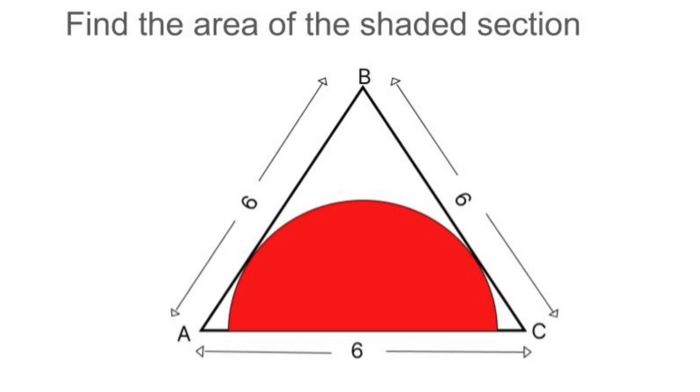Now, inside this triangle, there's a semicircle tucked right along the base. The base of the triangle is acting as the diameter of the semicircle. And what we're looking for is the area of that red shaded semicircle.